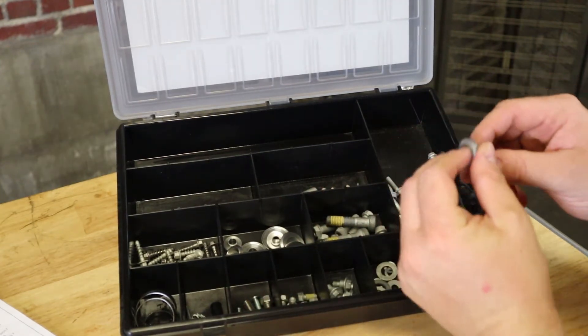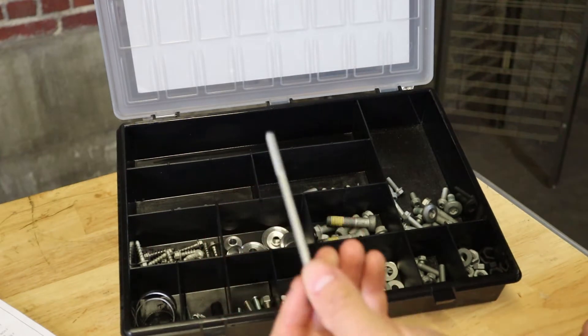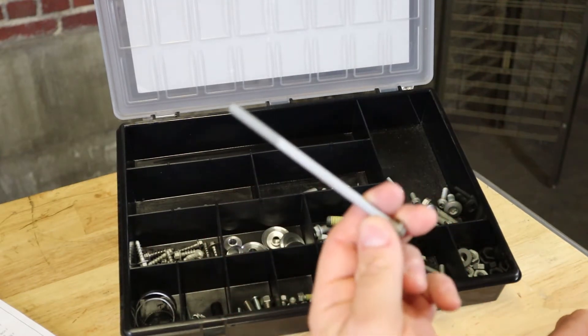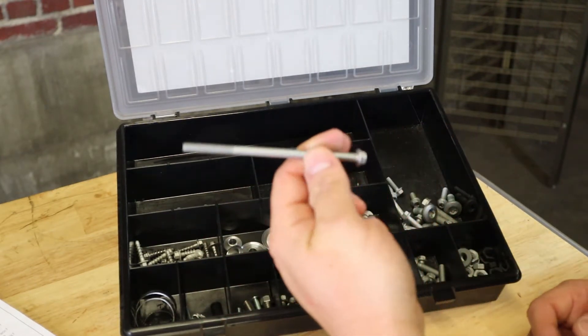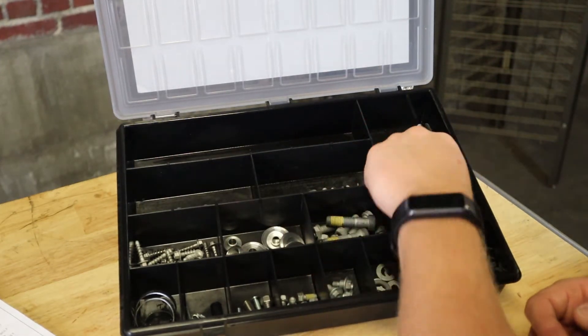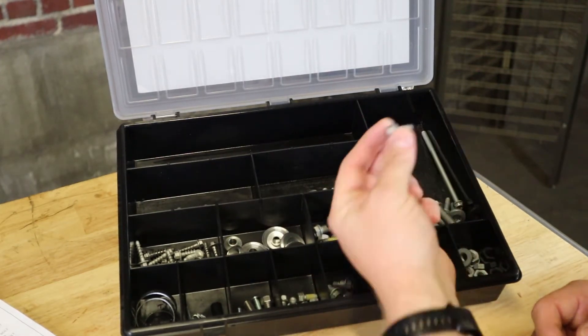So a couple more Torx on here, KTM seat bolt. That is definitely going to be a tough one to find on the fly. So you get one of those in this kit. A couple shorty M6s.